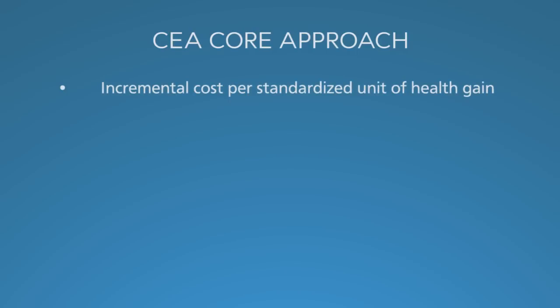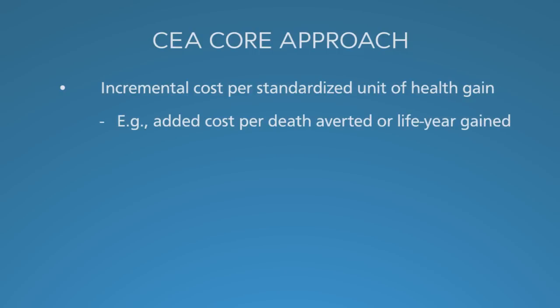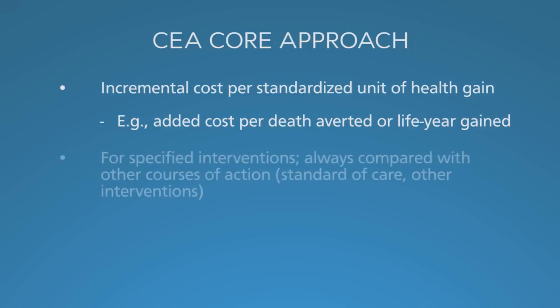Let's discuss the central cost-effectiveness analysis approach. We look at the incremental cost per standardized unit of health gain. This could be the added cost per death averted, or life year gained. For whatever intervention you're assessing, you have to compare to another identified course of action. That course of action may be a standard practice like visiting doctors, or it may be a less expensive or less intensive intervention. Whatever the comparison, it always has to be specified.